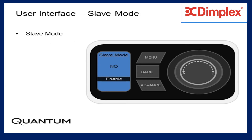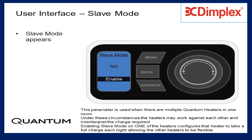Slave Mode appears. This parameter is used when there are multiple Quantum Heaters in one room. Under these circumstances, the heaters may work against each other and misinterpret the charge required. Enabling Slave Mode on one of the heaters configures that heater to take a full charge each night, allowing the other to be flexible.